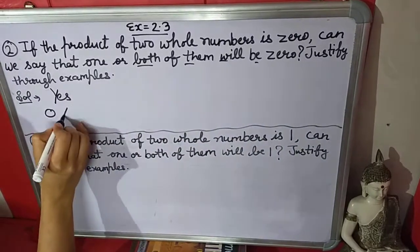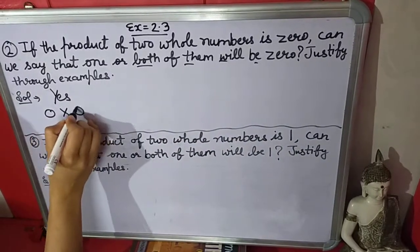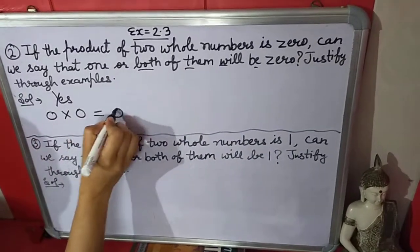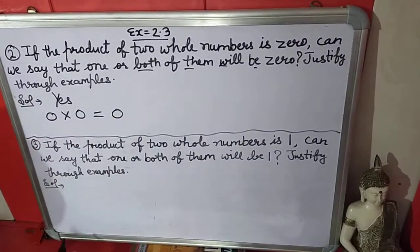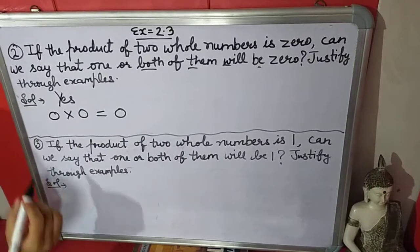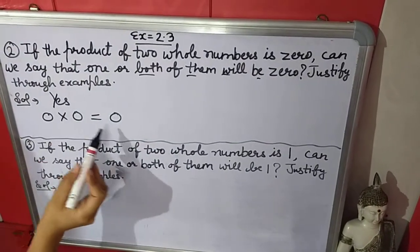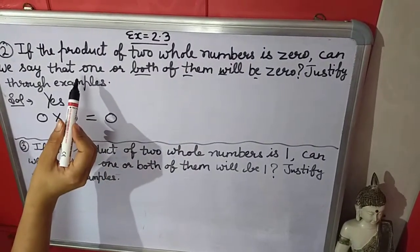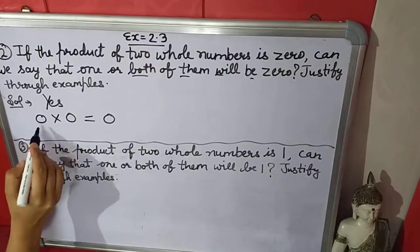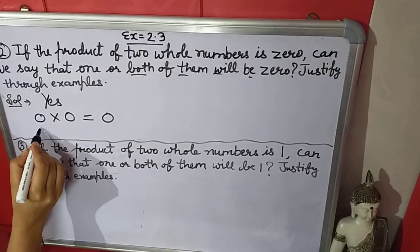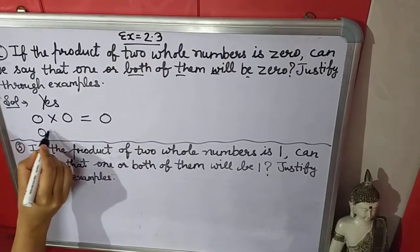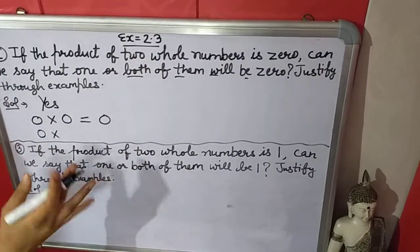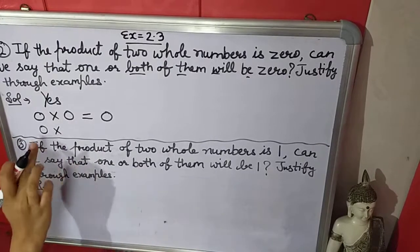If I take two zeros and multiply them, the product will be zero. So if both numbers are zero, the product will be zero. And if one number is zero and another number is any whole number except zero, then also the product will be zero.